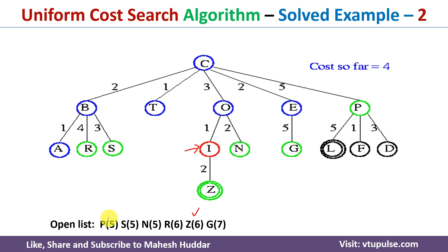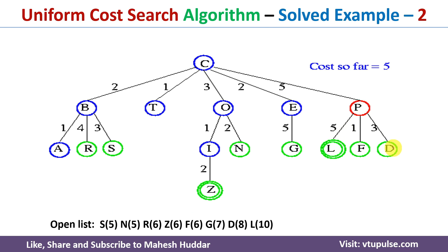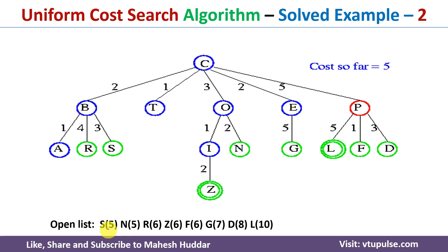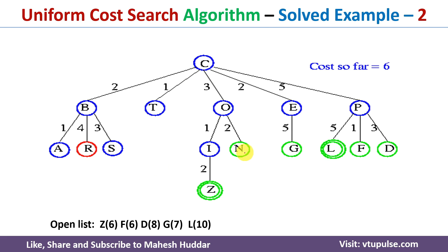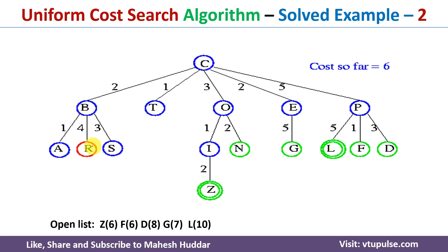We select the next element, P5. There are multiple paths from P: L, F, and D, which are added. Then we select S5 — no paths from S. Next we select N — no paths from N. Then we select R — no paths from R either.